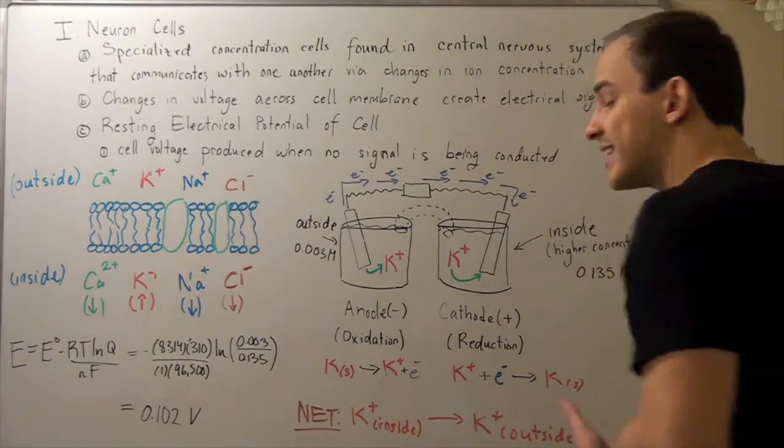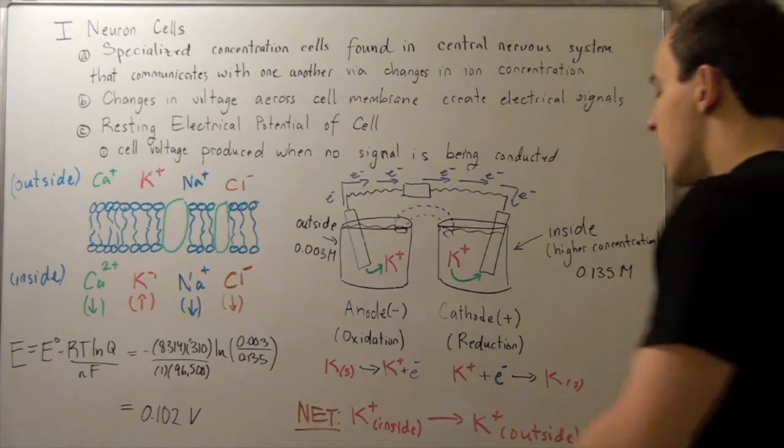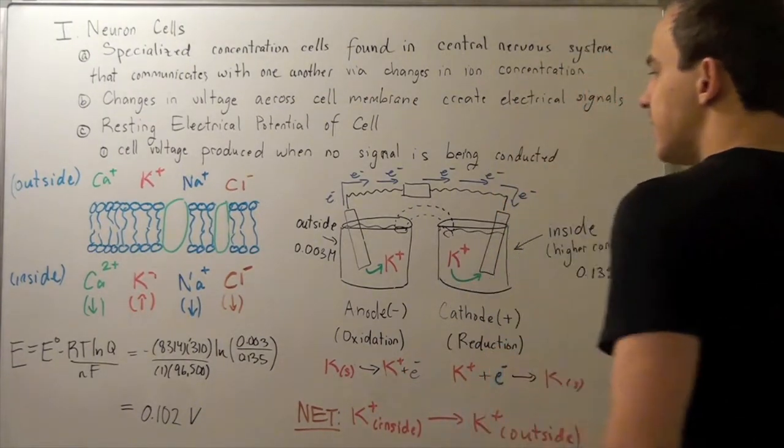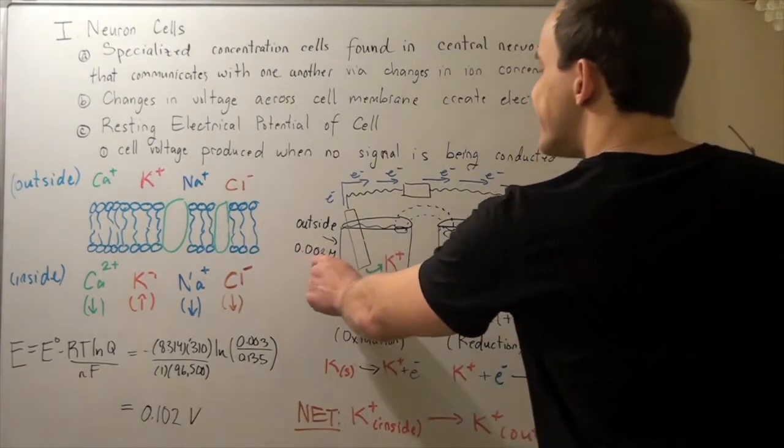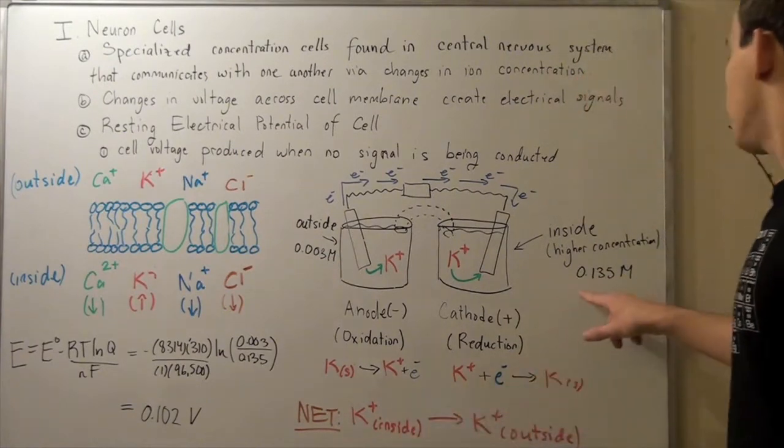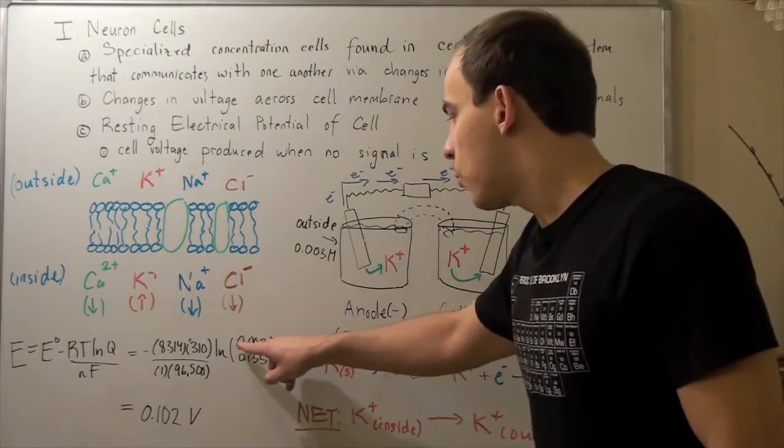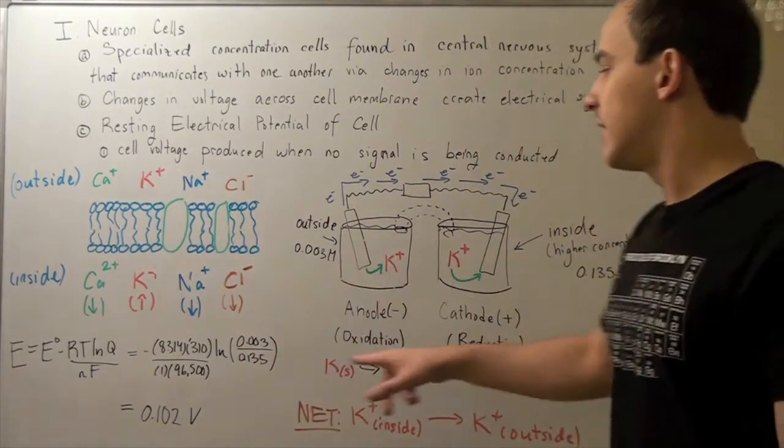What is Q? Well Q is the concentration of products divided by the concentration of reactants, right? And our products, right, is this guy, it's 0.03 molar. Our 0.003 molar, sorry. And this guy is 0.135 molar. So our Q is 0.003 over 0.135. The M's cancel out.